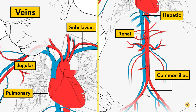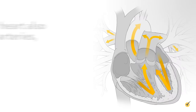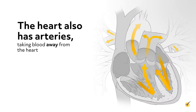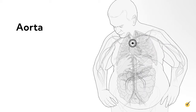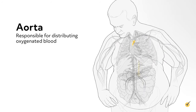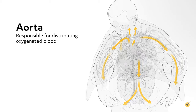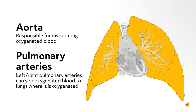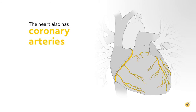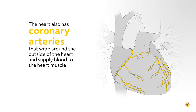Moving further from the heart and closer to the extremities, the blood vessels get smaller and veins become venules. The heart also has arteries taking blood away from the heart. Some major arteries include the right pulmonary artery, the left pulmonary artery, and the aorta. The aorta branches off into smaller arteries and is responsible for distributing oxygenated blood throughout the body — it is the biggest, strongest artery in the body. The left and right pulmonary arteries carry deoxygenated blood to the lungs, where the blood gets oxygenated.